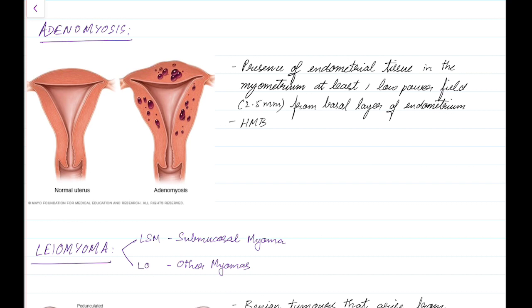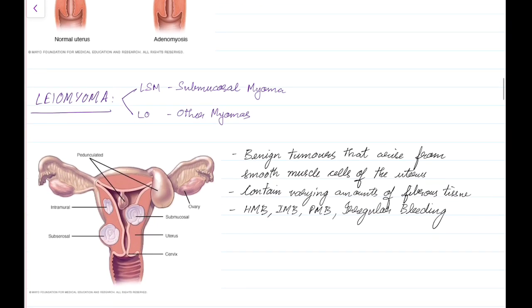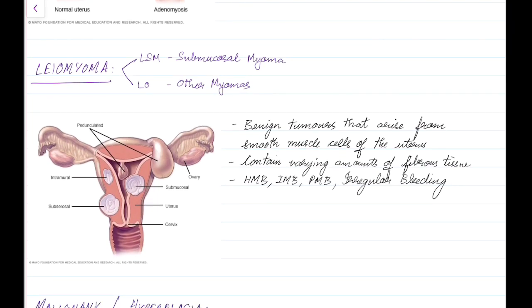Now let us see about adenomyosis, another structural abnormality that can lead to abnormal uterine bleeding. Adenomyosis is the presence of endometrial tissue in the myometrium, at least one low-power field from the basal layer of endometrium. Adenomyosis can lead to heavy menstrual bleeding. This picture shows adenomyosis — as you can see, there is endometrial tissue in the myometrium.